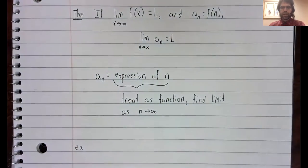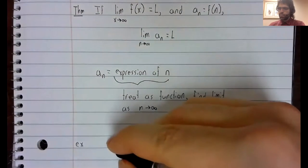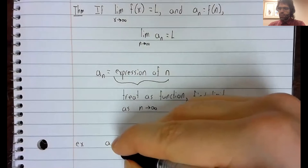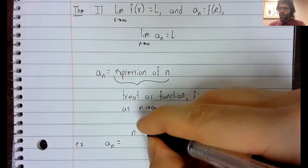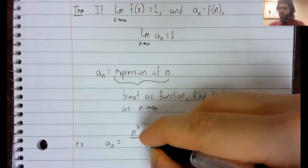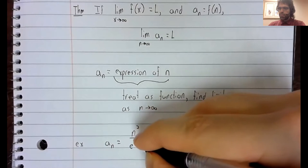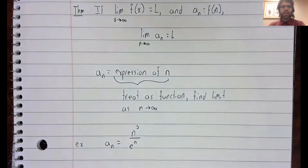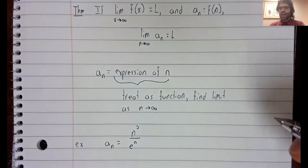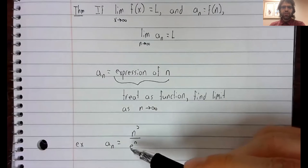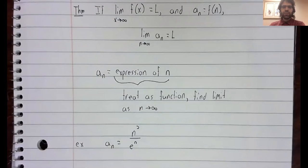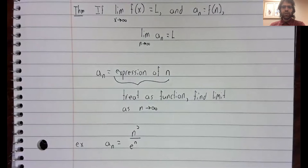So, for example, a sub n equals n squared divided by e to the n. Let's ask if this converges, and if it does, what it converges to.